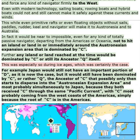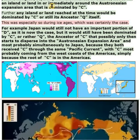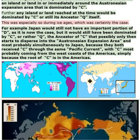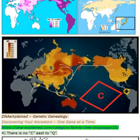Further, any island or land reached at the time would be dominated by sea or still its ancestor Q itself. This was especially so during ice ages, which was certainly the case. For example, Japan would still not have had an important portion of D as it is now the case, but it would still have been dominated by sea, or rather Q — the ancestor of C — that possibly only then starts to disperse into the Austronesian expansion area and most probably simultaneously to Japan, because they both received C through the same Pacific current, with C most probably coming from the west coasts of the Americas, simply because the root of C is in the Americas. DNA Explained, Genetic Genealogy — Discovering Your Ancestors, One Gene at a Time.